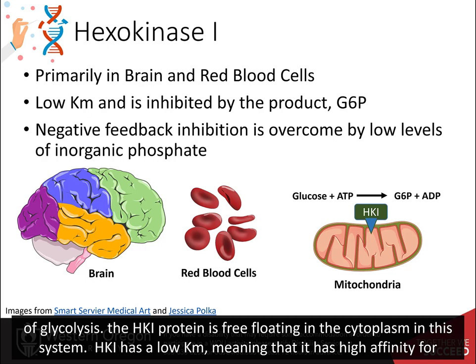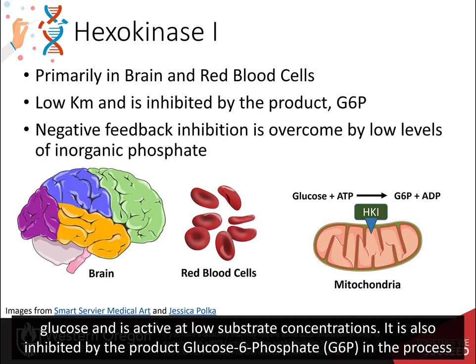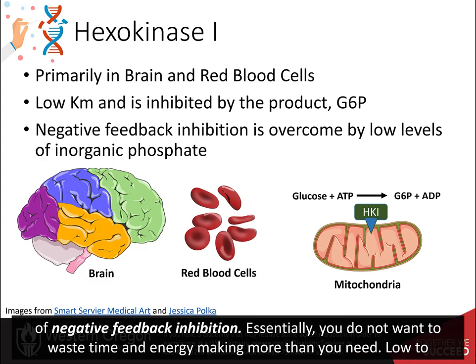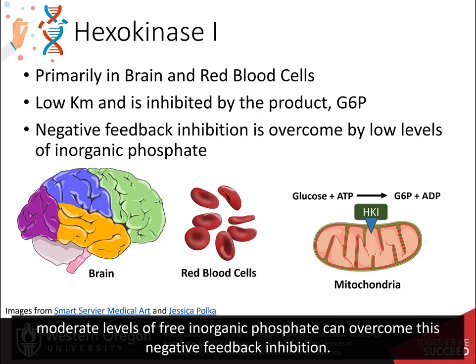HK1 has a low Km, meaning that it has high affinity for glucose and is active at low substrate concentrations. It is also inhibited by the product glucose 6-phosphate in the process of negative feedback inhibition — essentially, you do not want to waste time and energy making more than you need. Low to moderate levels of free inorganic phosphate can overcome this negative feedback inhibition.